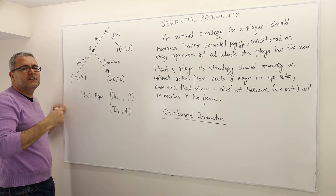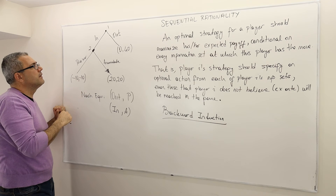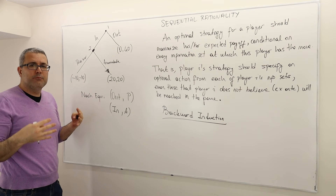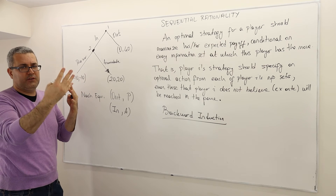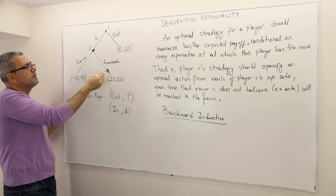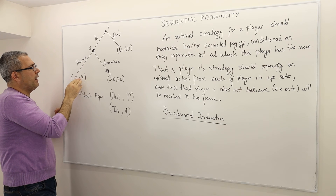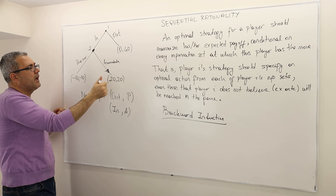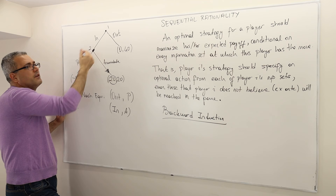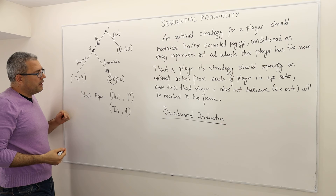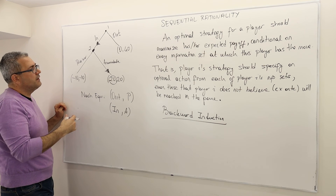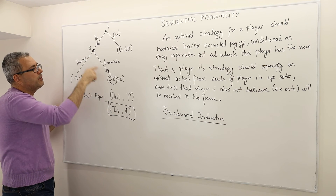Let me put an arrow here indicating that player two's optimal strategy is accommodate. Then let's move on to player one. Because this game is common knowledge, both player one and player two are expected to make this thought process. Player one is going to say: because player two will play accommodate if the game ever comes to this point, if I play in, I really shouldn't worry about the payoff of minus 10 — my opponent is going to accommodate, so I'm going to get 20 if I choose in. And if I choose out, I get zero. So obviously I should maximize my payoff and go in.